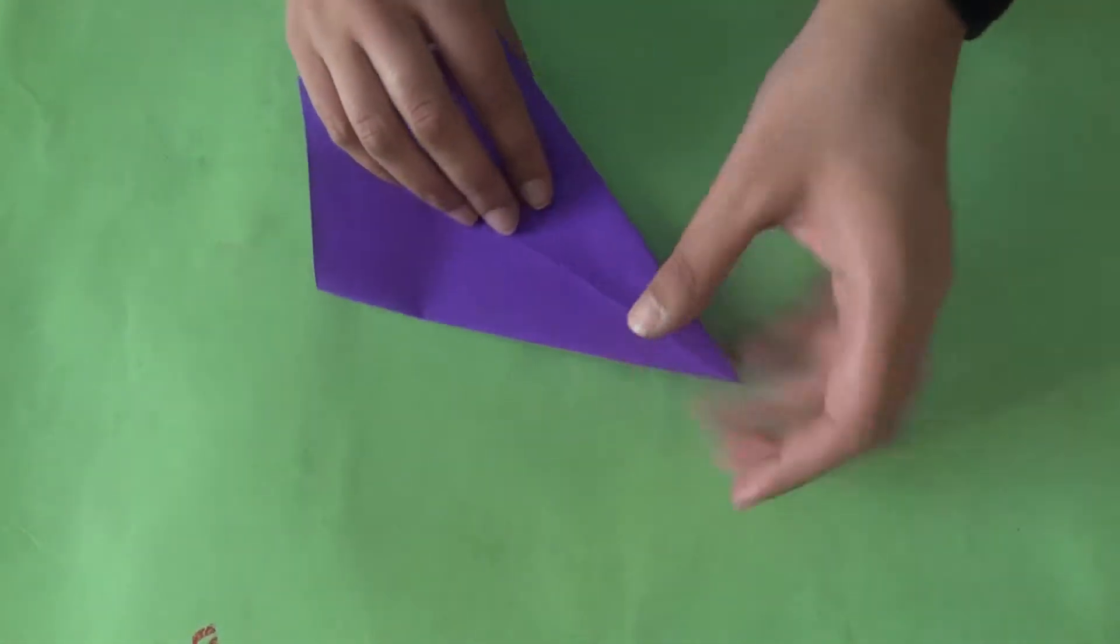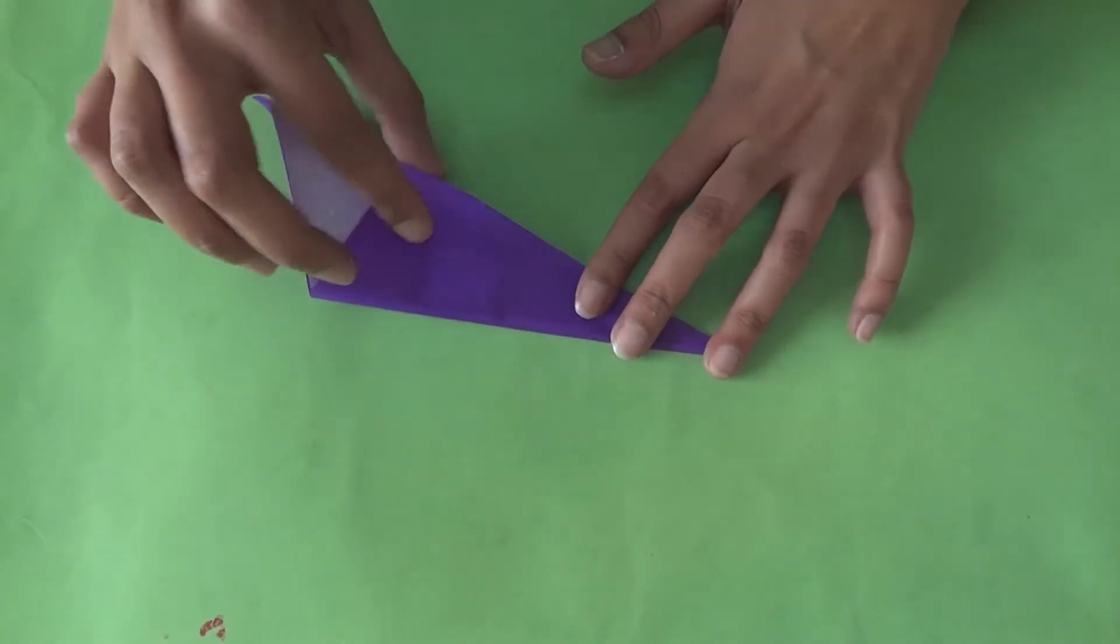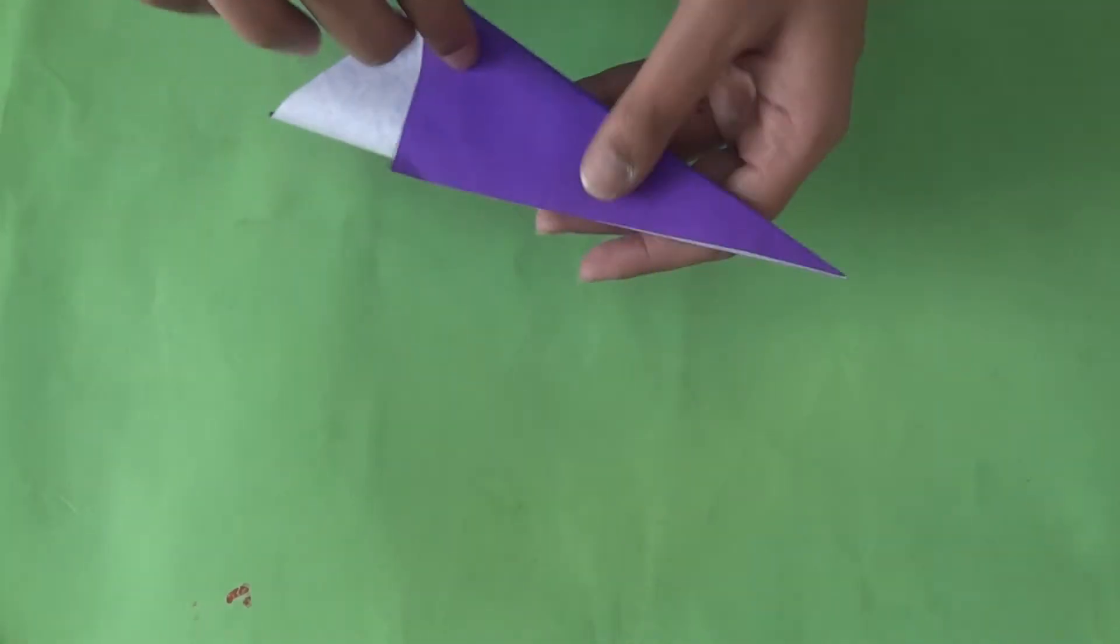Fold this cone into half such that these flaps are on the outer side.